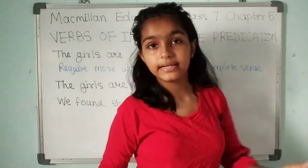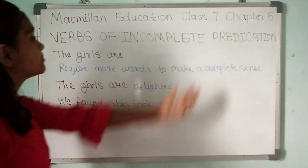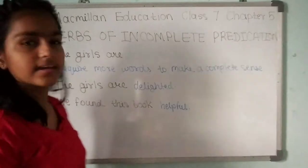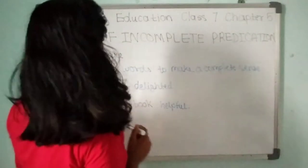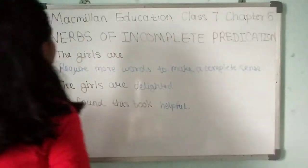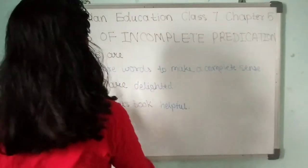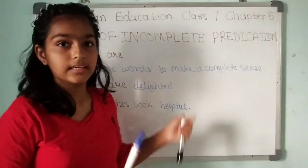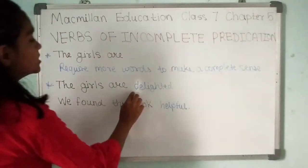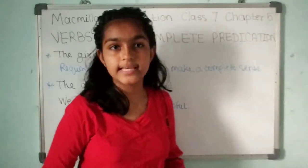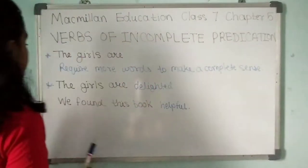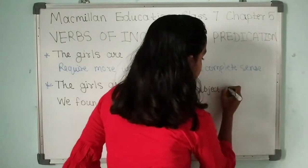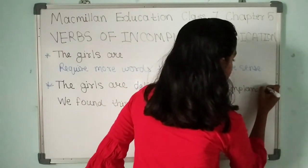Now moving on to our next topic — verbs of incomplete predication. What are verbs of incomplete predication? For example, 'The girls are.' This does not make any sense on its own — the sentence is incomplete. So we call these verbs of incomplete predication. There are two types of complements: subject complement and object complement.